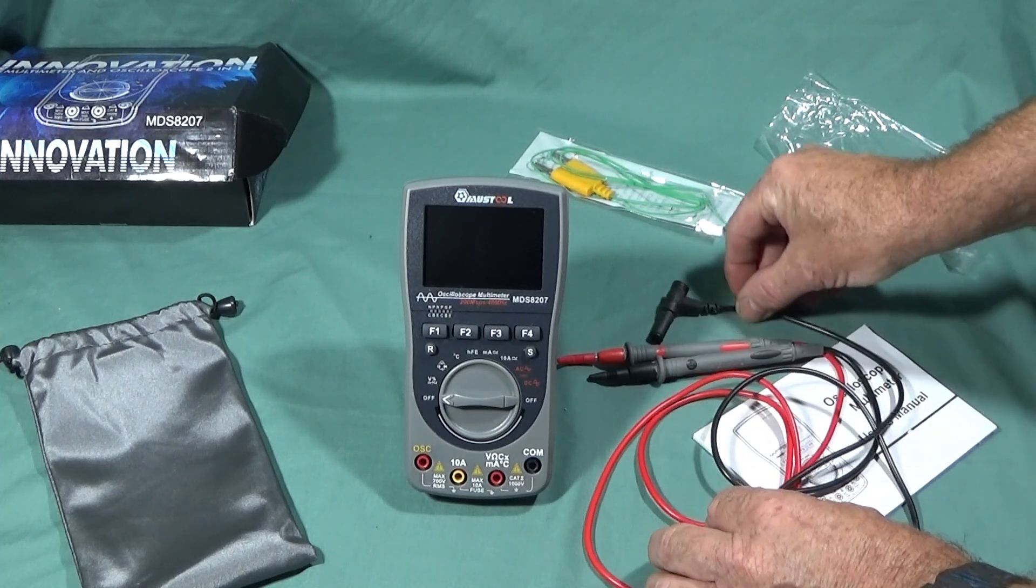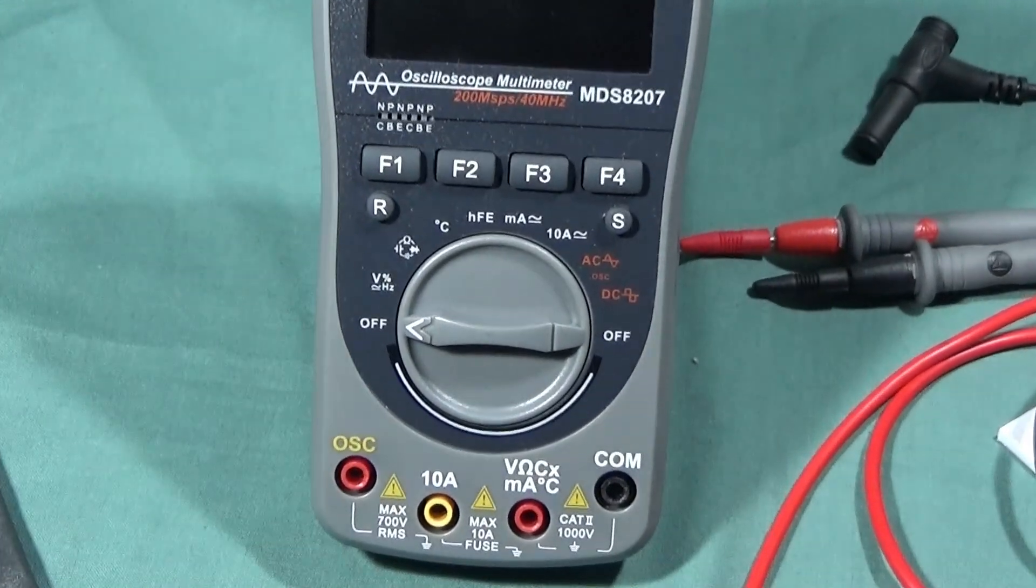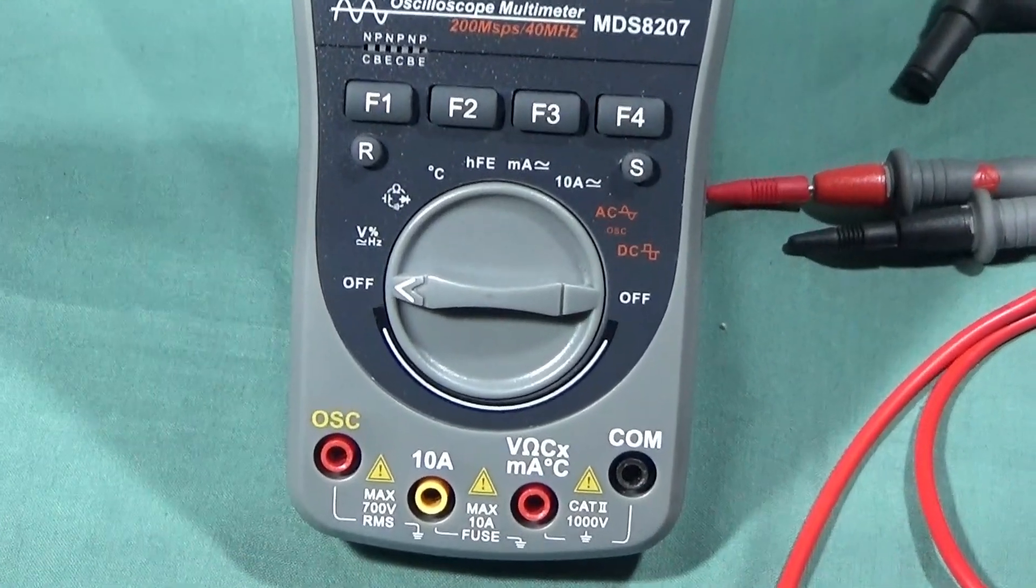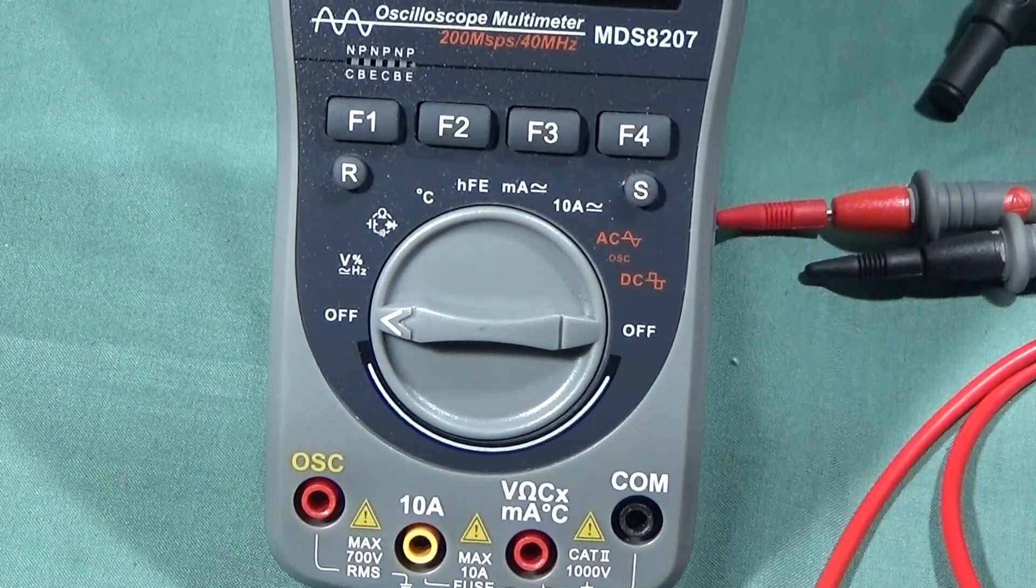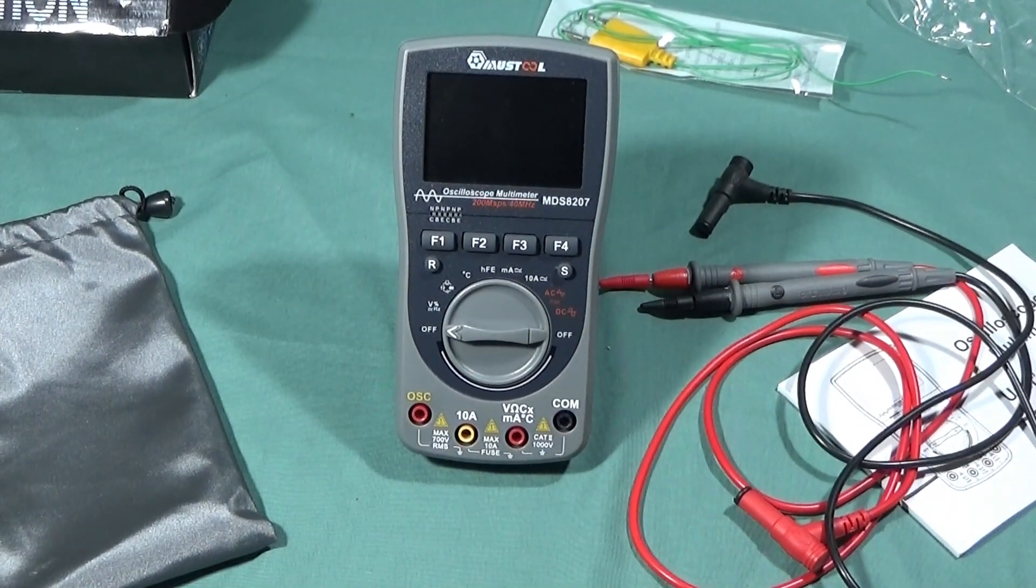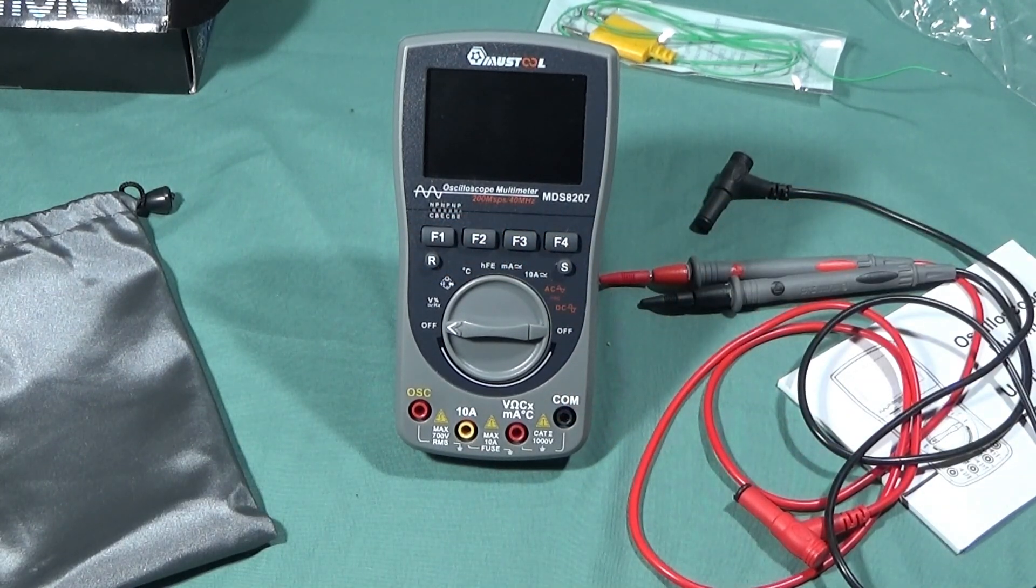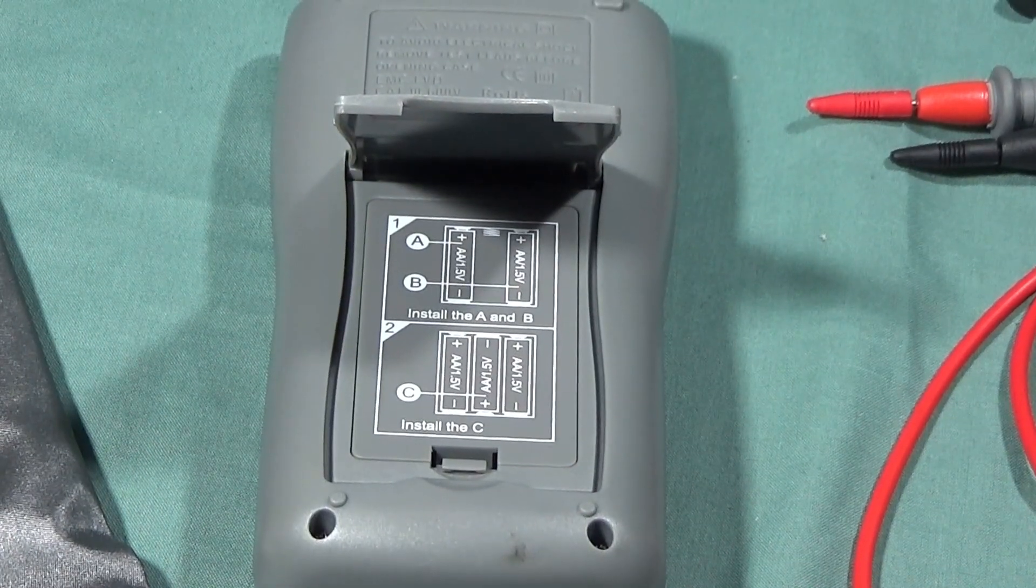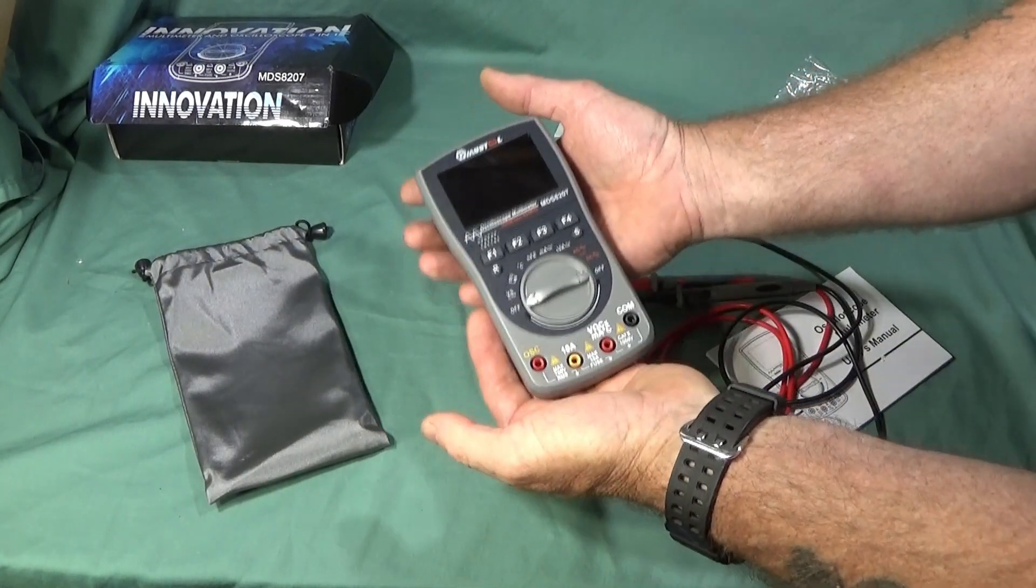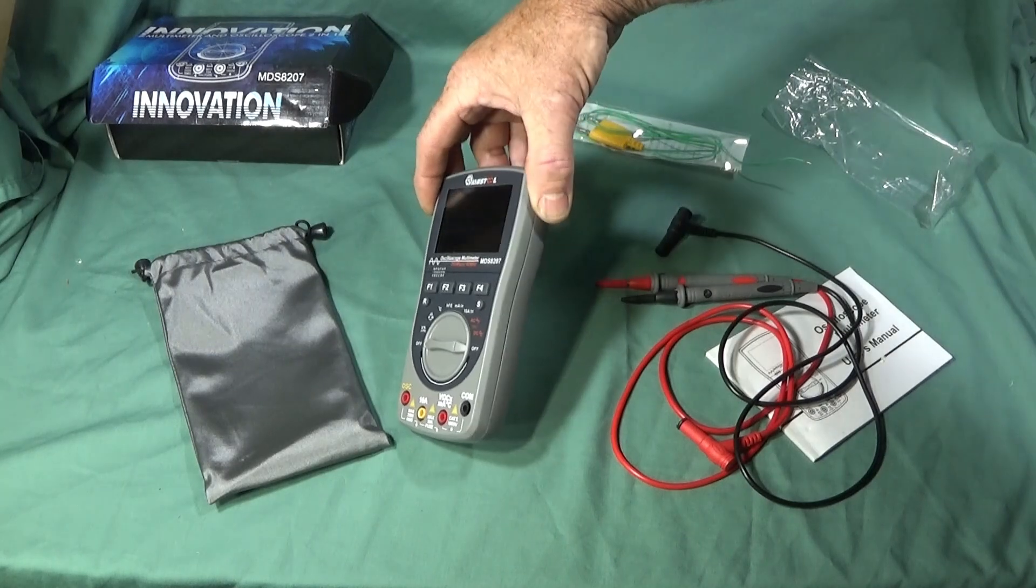Here are some close-ups of the actual multimeter. A lot of people like this model because it has two off positions on the dial. Across here we have four function menu buttons. The multimeter is made of a tough ABS-type plastic and it's a nice heavy item. It actually feels to be really good quality.